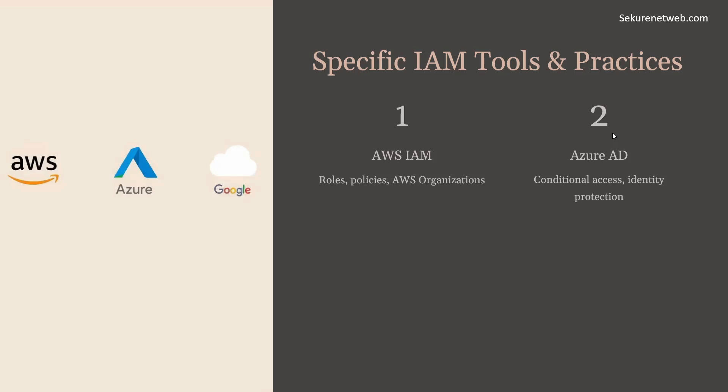In Azure, use Azure Active Directory, leveraging conditional access policies and identity protection features to enhance security. In Google Cloud, use Google Cloud IAM to implement granular permissions and service accounts to control access to Google Cloud resources. Be ready to discuss how you have implemented these IAM practices in past roles, such as setting up federated identity with Azure Active Directory or enforcing MFA across an organization using AWS IAM policies.